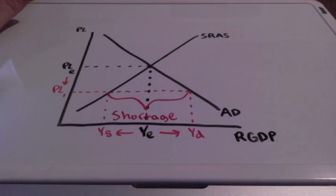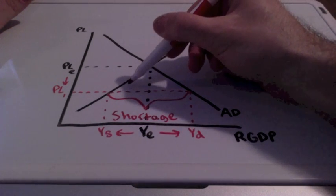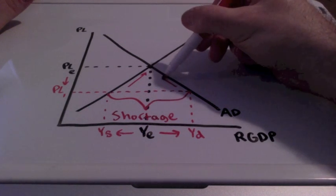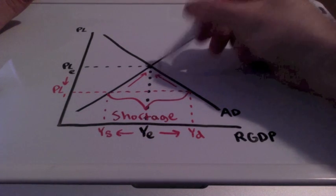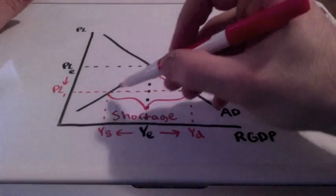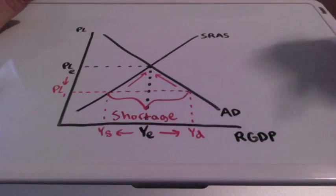Firms will seek to eventually increase their inventory levels back to the equilibrium point. Prices will eventually rise and output will increase.